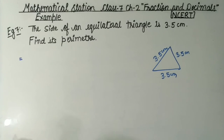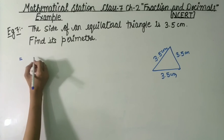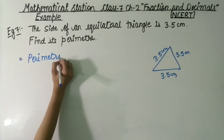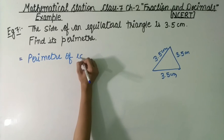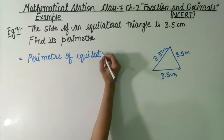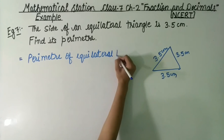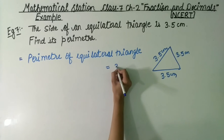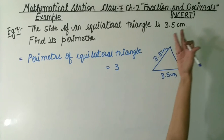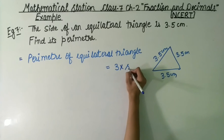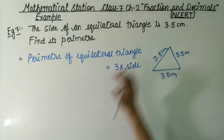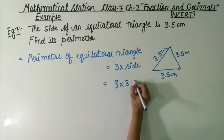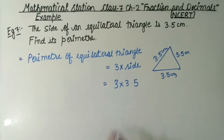What formula do we need to use? The perimeter of an equilateral triangle is equal to 3 multiplied by the side length. So we multiply 3 by 3.5 cm — that is the number of sides multiplied by the side length.